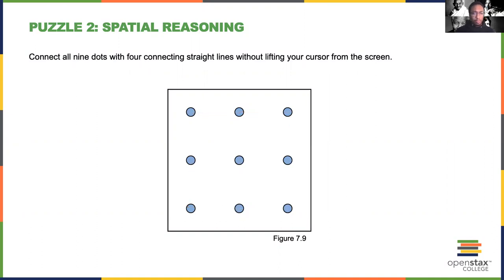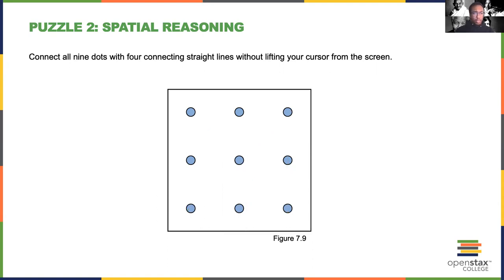Let's try a different way. Maybe it starts off diagonally — you could go like this and then like this. And then if you go through here, you're going to be left with several dots that aren't covered. Let's try another one. Maybe something like this would be one straight line, and like this would be two, then three, then four — still doesn't work.